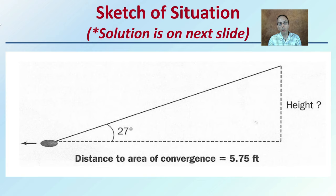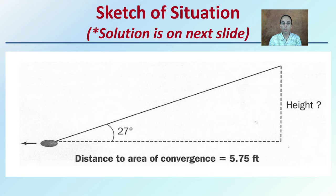Here we see a sketch of the situation. If you weren't able to get an answer, were you thinking about it this way? Here's the angle of impact, here's the distance, and we want to determine what the height is. This gives you a visual representation of the situation.